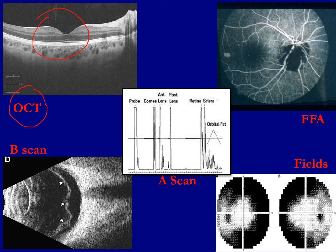In OCT, you can see the layers of the retina. You can see right from the retinal pigment epithelium, which is the first white layer, and the internal limiting membrane, which is at the surface of the retina. Then there is the FFA.